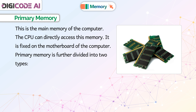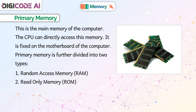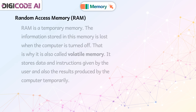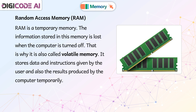Primary memory is further divided into two types: Random Access Memory and Read Only Memory. RAM is a temporary memory. The information stored in this memory is lost when the computer is turned off. That is why it is also called volatile memory. It stores data and instructions given by the user and also the results produced by the computer temporarily.